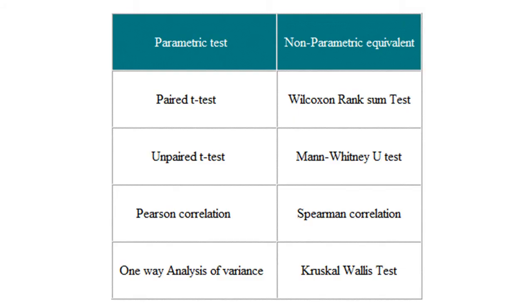Just to give a brief overview: parametric tests include paired t-test, unpaired t-test, Pearson correlation, and one-way ANOVA. Non-parametric tests include the Wilcoxon rank-sum test, Mann-Whitney U test, Spearman correlation, and Kruskal-Wallis test. There are many more, but these are the most commonly used.